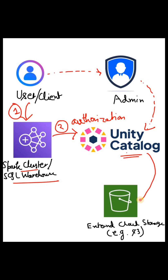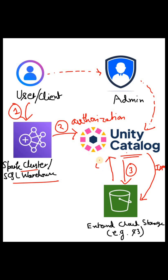If the user is authorized, Unity Catalog reaches out to the external cloud storage to obtain a downscoped temporary credential for the Spark cluster, so the Spark cluster can fetch the data from cloud storage. Unity Catalog and cloud storage already have authentication set up using IAM. This request is step three, and the cloud storage returns a downscoped temporary credential.